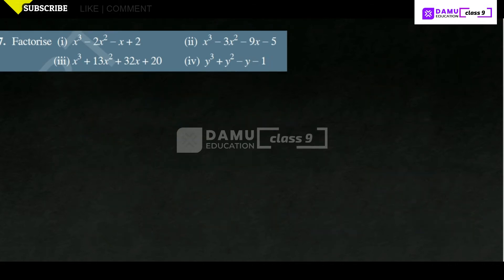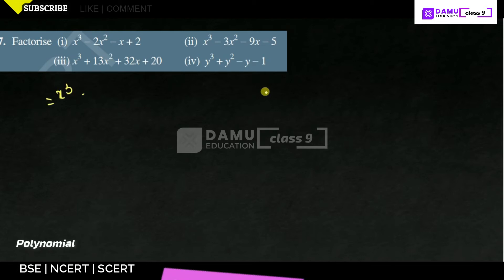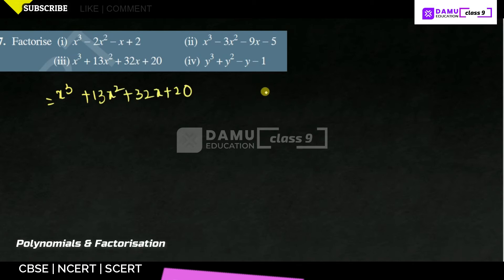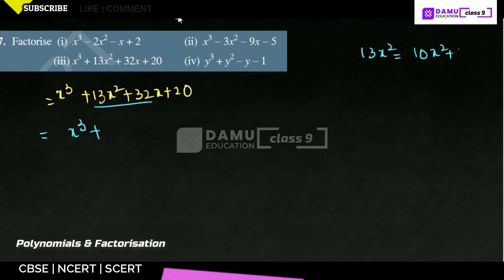The third one is x³ + 13x² + 32x + 20. As I told, we cannot take groups of two directly. Because there is no simple factorization. So we need to divide the given terms. We write x³ + 13x² by splitting 13x² as 10x² + 3x². For 32x, we write it in the format of 30x + 2x — using nearest multiples of 5.